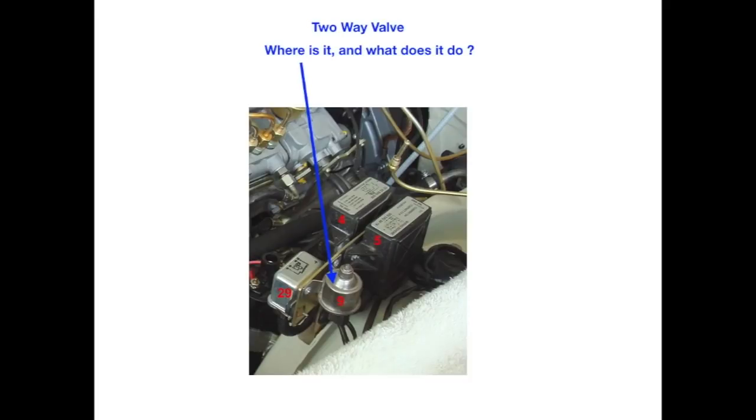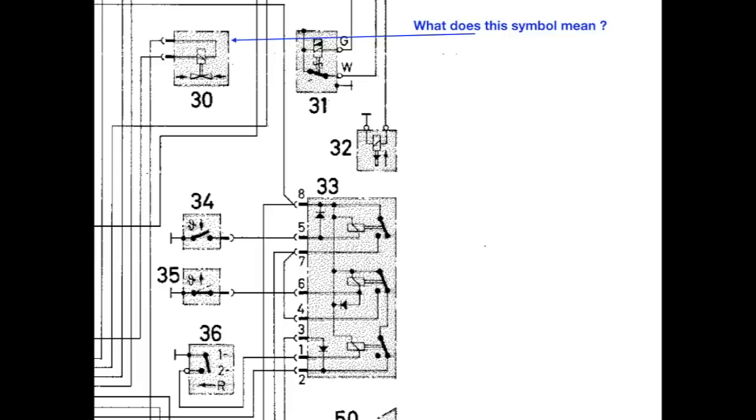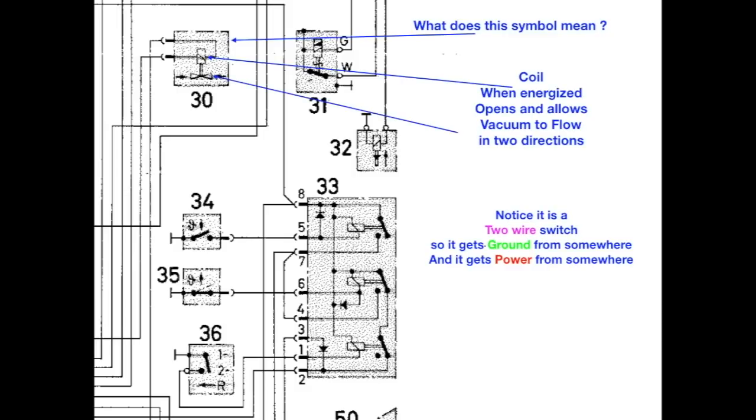The two-way valve, where is it, and what does it do? Well, let's first take a closer look at this two-way valve. What does this symbol mean? This right here is the coil. That's the standard, at that time, the standard symbol for a coil for Mercedes. And when that energizes, it opens and allows vacuum to flow in two directions. Notice that it is a two-wire switch, so it gets ground from somewhere, and it also is going to get power from somewhere.